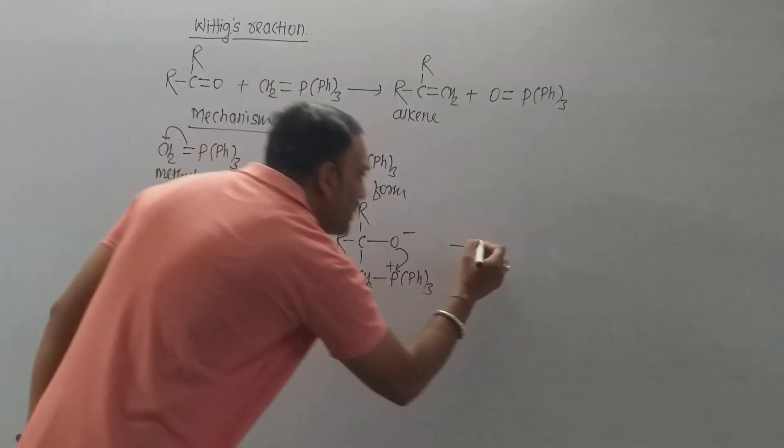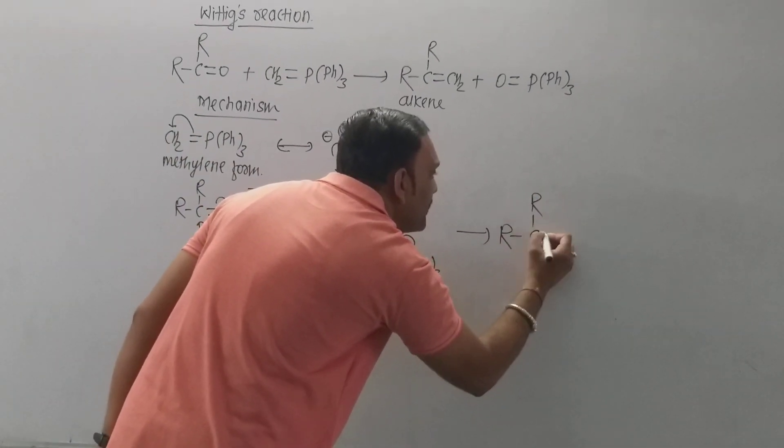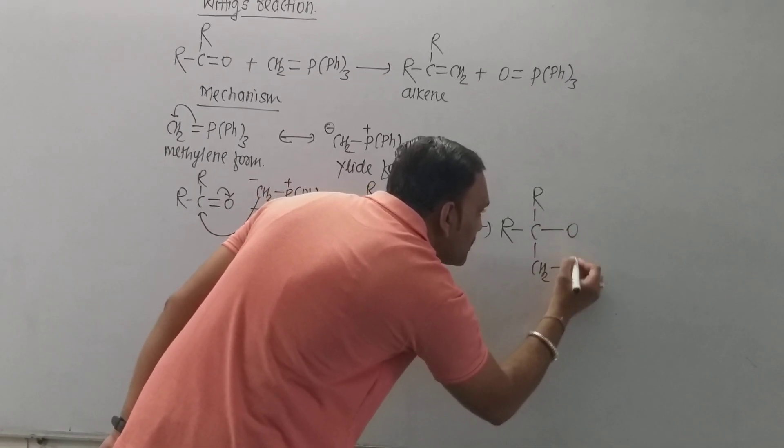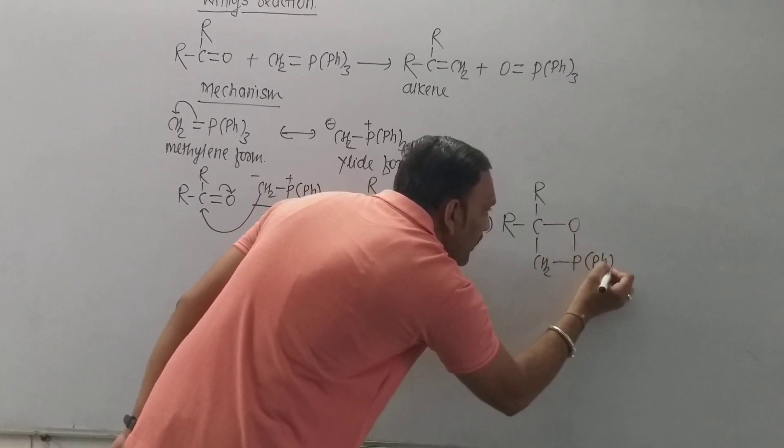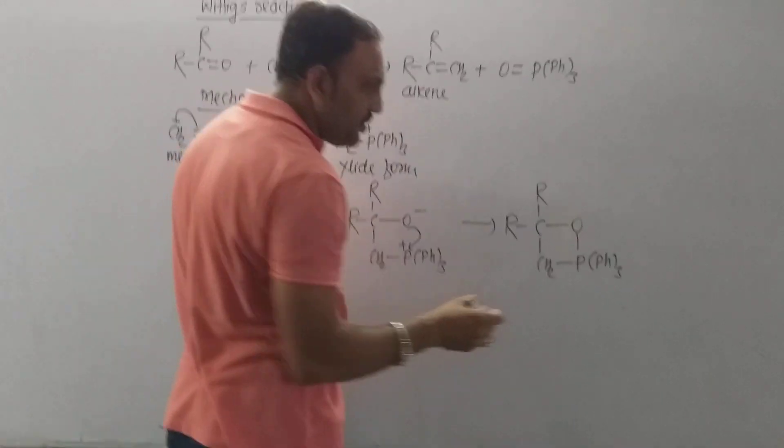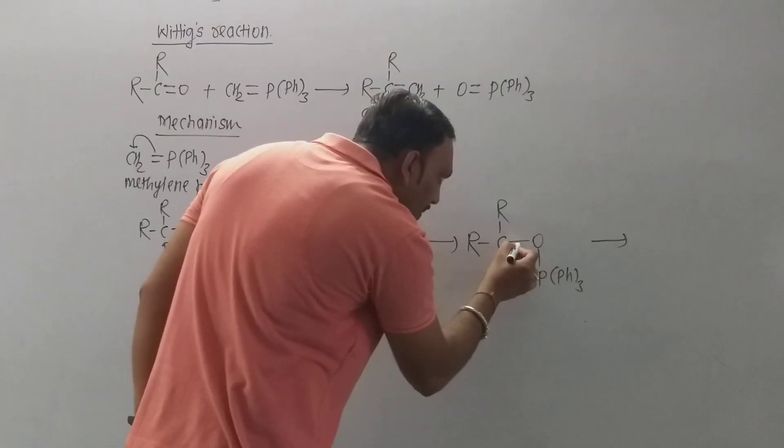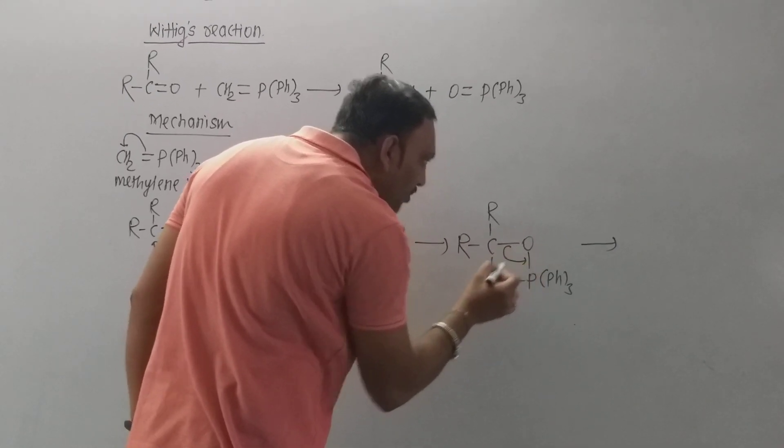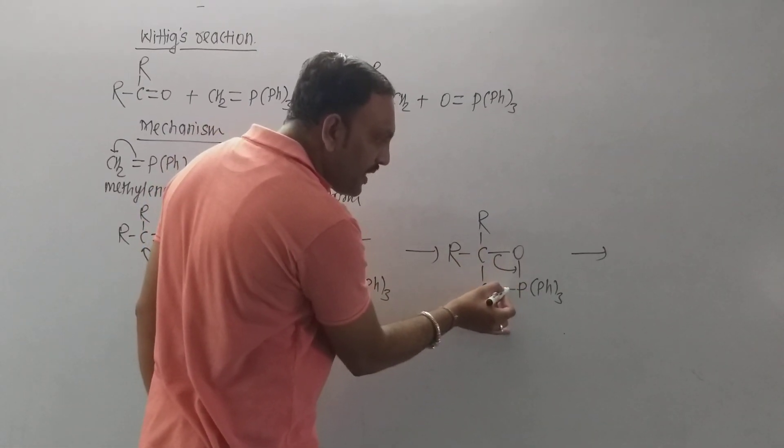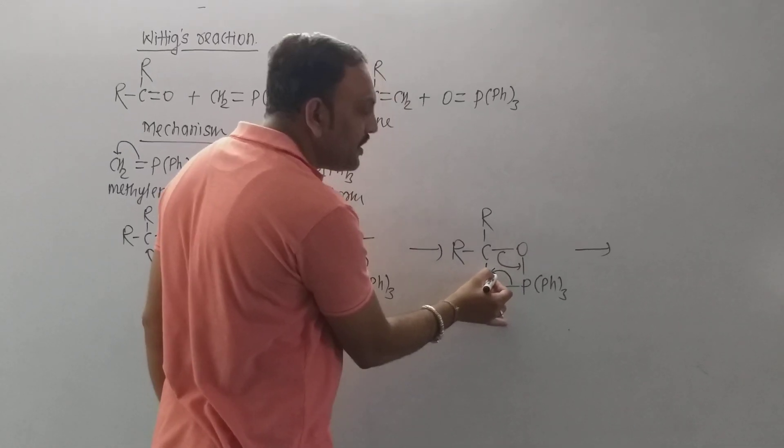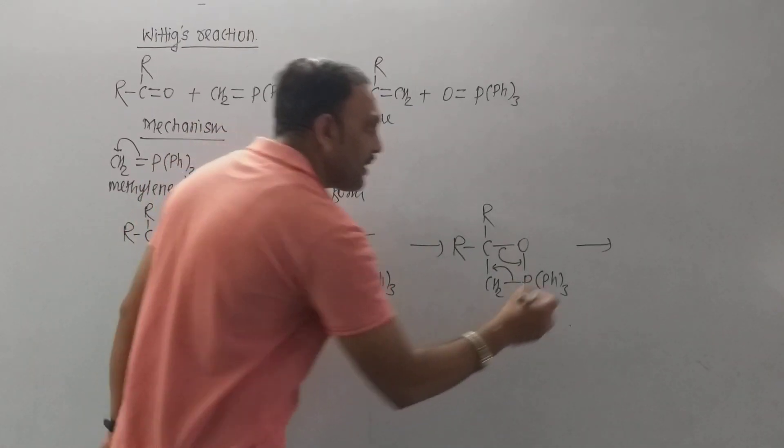That leads to the formation of an intermediate which can be represented as shown. Now at this point, oxygen along with this pair of electrons shares the electron pair right here with phosphorus, and this electron pair gets shifted towards this.